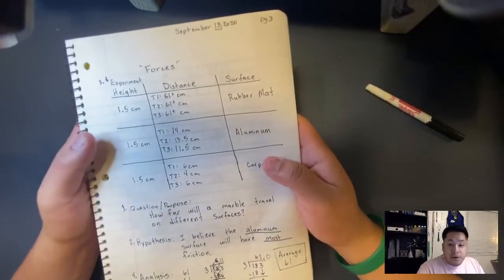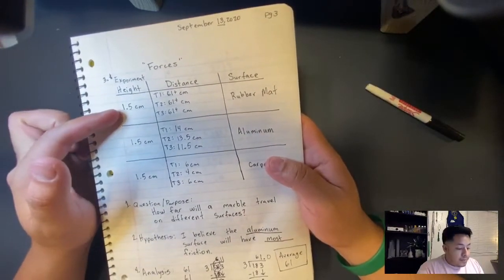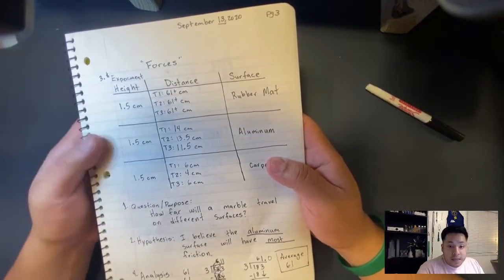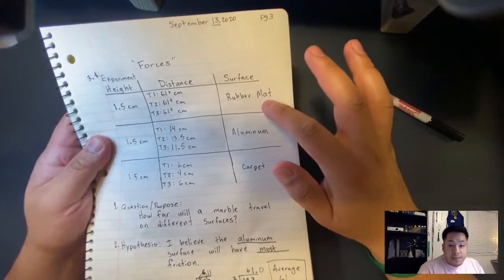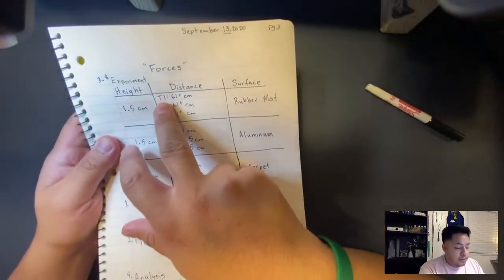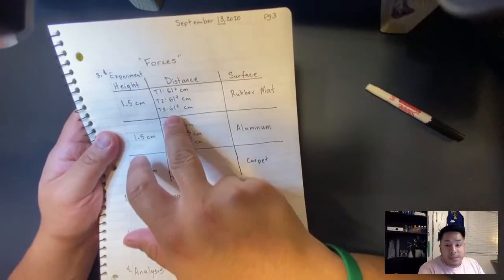I used a marble to roll it down a ramp that is 1.5 centimeters in height. First on the rubber mat. The distance on the first one, second one, and third one, that was 61 centimeters.